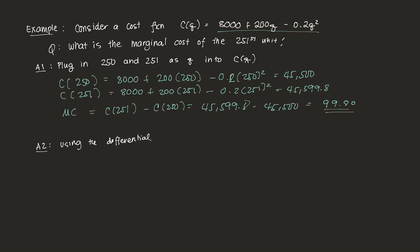The differential can also aid us in solving this. Remember, the form of the differential is dy = f'(x)dx. To build the differential for our cost function, that's dC(q) = C'(q)·dq, where C'(q) is the first-order derivative of cost with respect to output, and dq is the change in output. So we need both of these components.